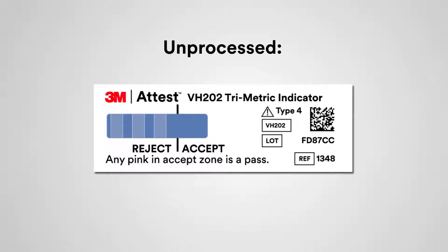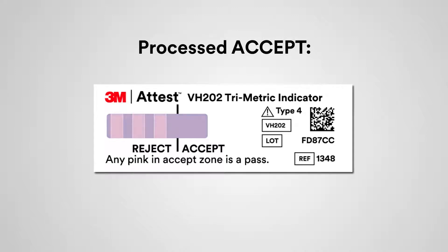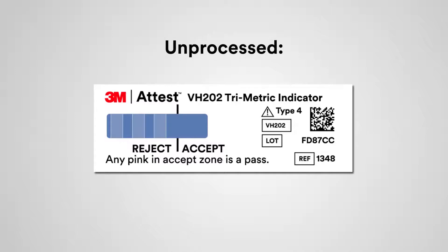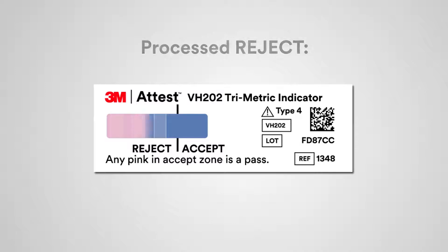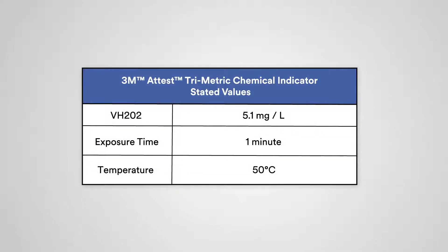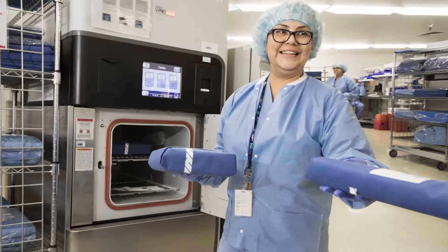Because our CI has a clearly labeled Accept and Reject zone, after processing you should see a color change toward pink in the Accept window of the 3M A-Test Trimetric CI. If a color change toward pink has not entered the Accept window, a Reject result is indicated, and the items in the pack, container system, or tray were not exposed to sufficient vaporized hydrogen peroxide sterilization conditions. These items should be returned for reprocessing per facility policy and procedures.